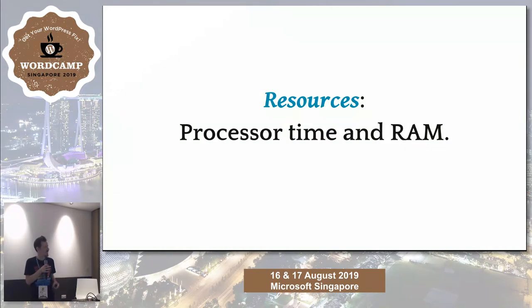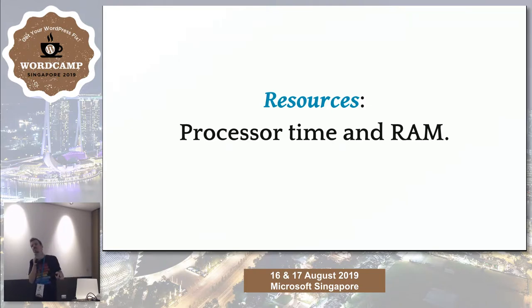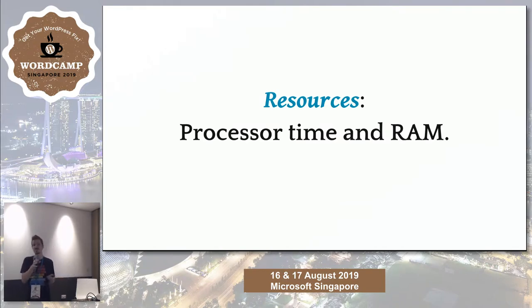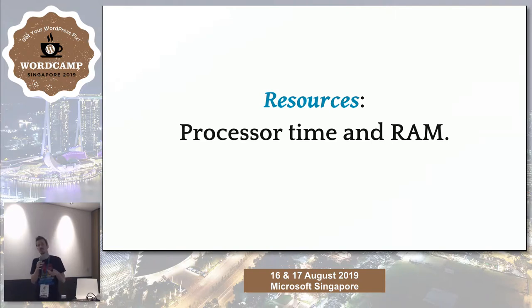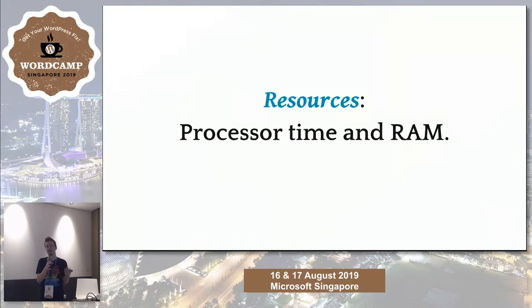When talking about resources, the main concerns are processor time and memory. One of the more difficult things with GD is that it requires the entire image to be uncompressed in memory while doing all its operations. Imagick does not. So if your host, especially a shared host, supports Imagick, you're a lot more likely to have the request completed. As phone images reach resolutions that used to be only professional camera sizes, running out of resources becomes increasingly likely.